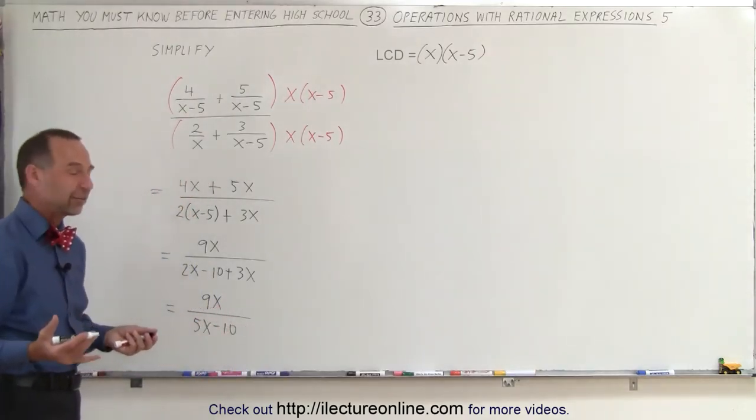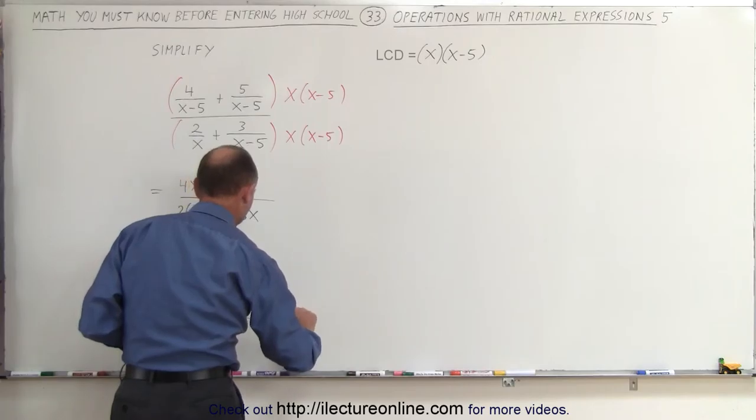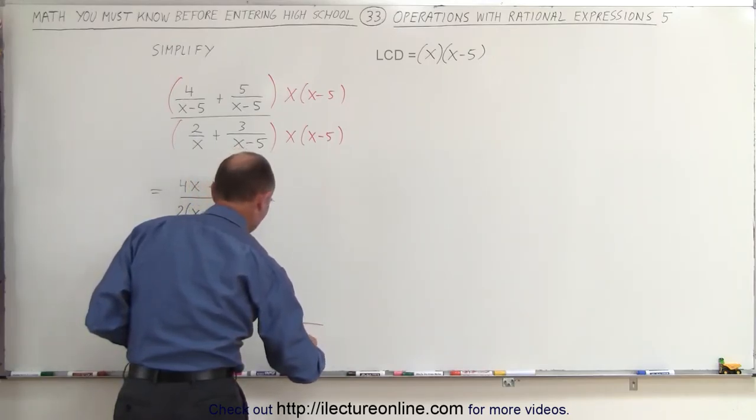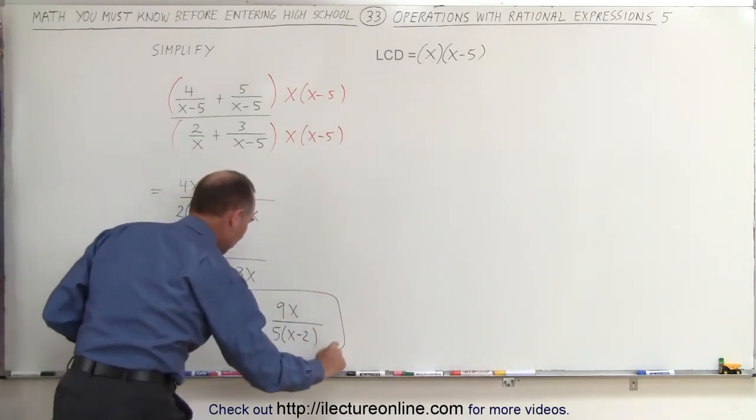We could factor out a 5 in the denominator, we could potentially write this as 9x divided by 5 times x minus 2. If you prefer that, but either answer would be correct.